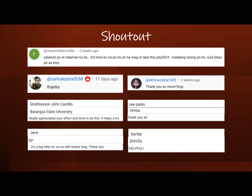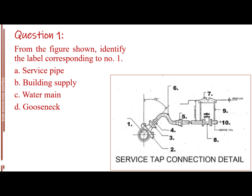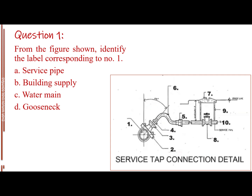Question number 1. From the figure shown, identify the label corresponding to number 1. Letter A, service pipe. Letter B, building supply. Letter C, water main. Letter D, gooseneck. The answer is letter C, water main.